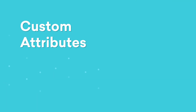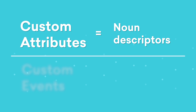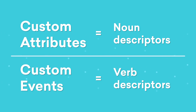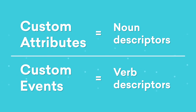You can think of custom attributes as the noun descriptors that you set for a user, whereas custom events are the active verb descriptors. These metrics will update in real time as users go along their customer journey.